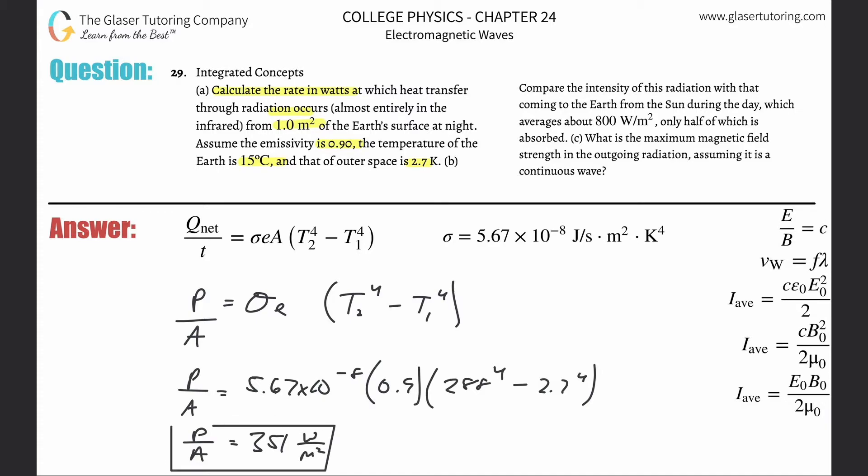For letter B, compare this intensity. These are the units of intensity, watts per meter squared. That's why I'm setting it up that way. Compare the intensity of that coming to the Earth from the Sun during the day, which averages about 800 watts per meter squared. Only half though is absorbed.